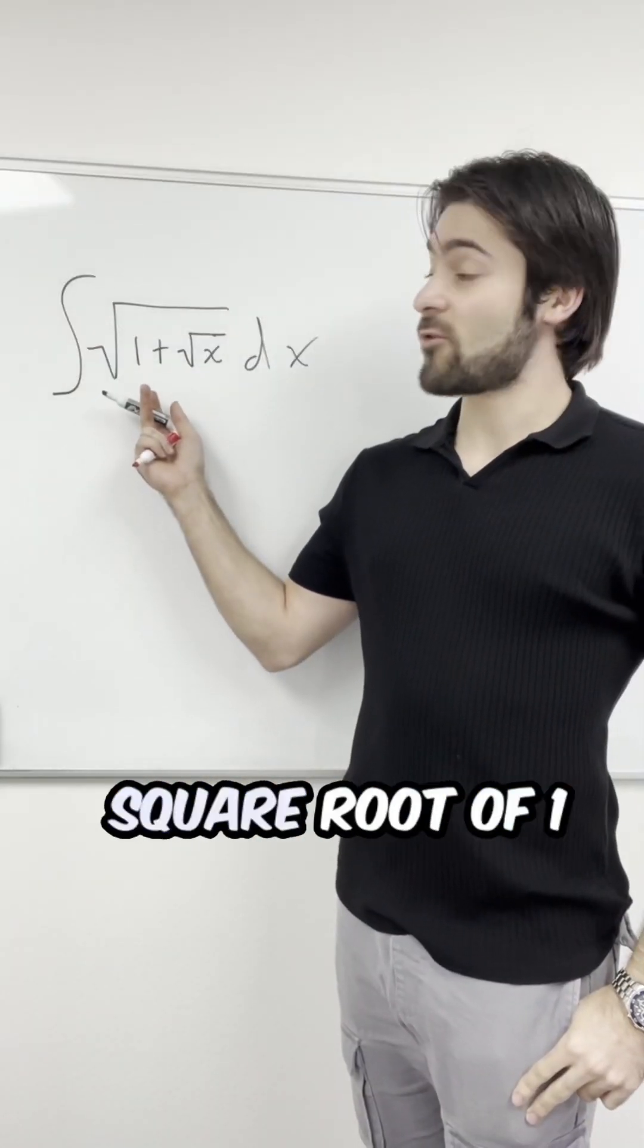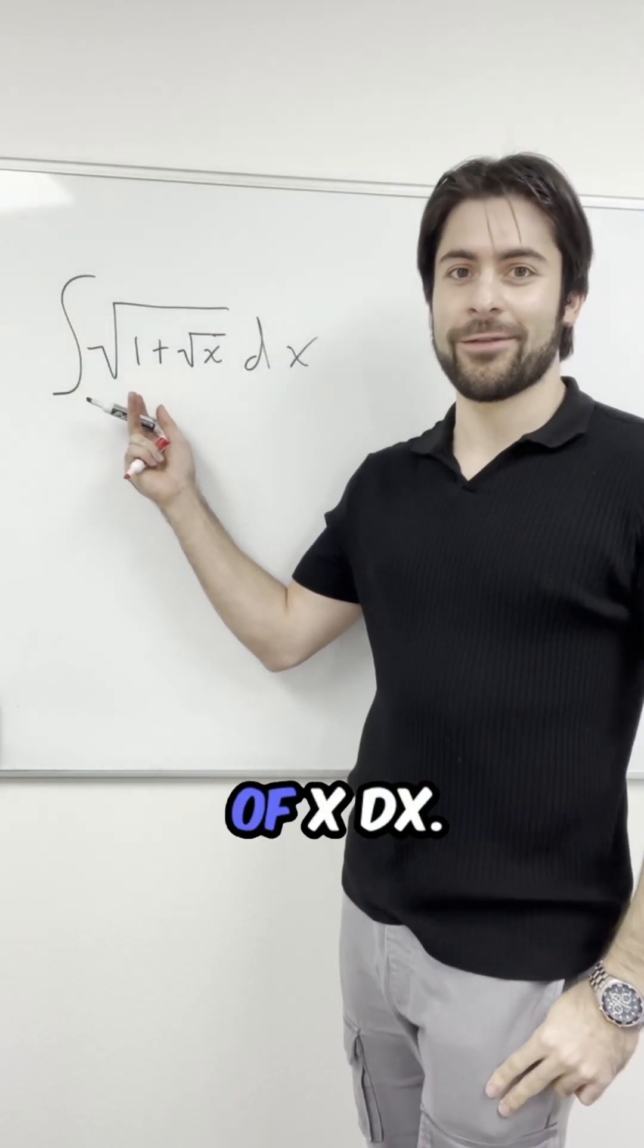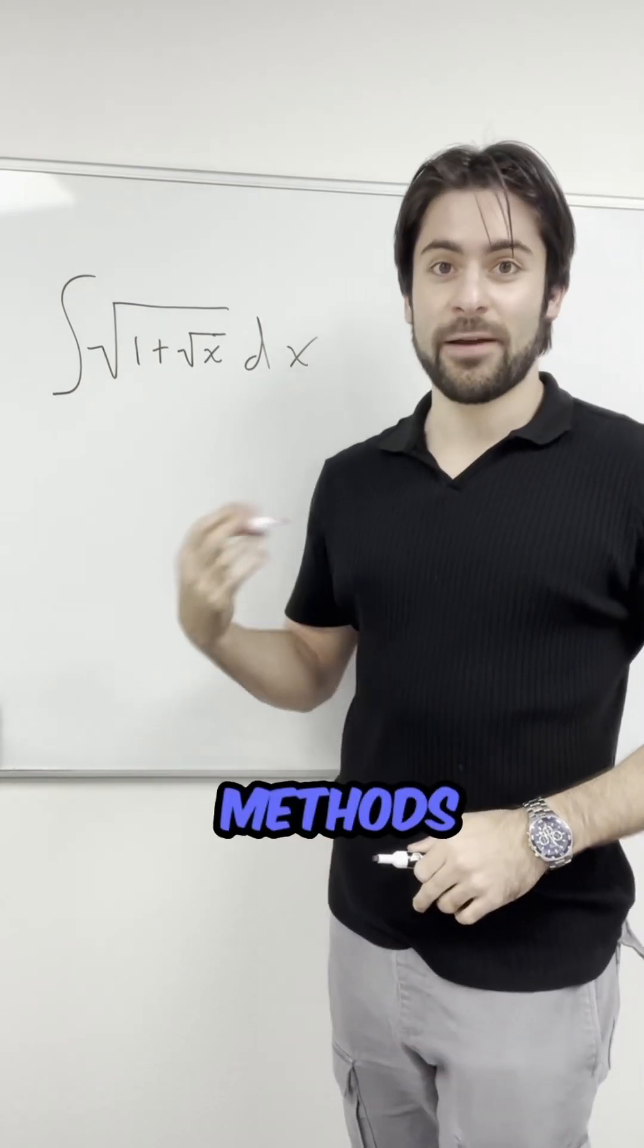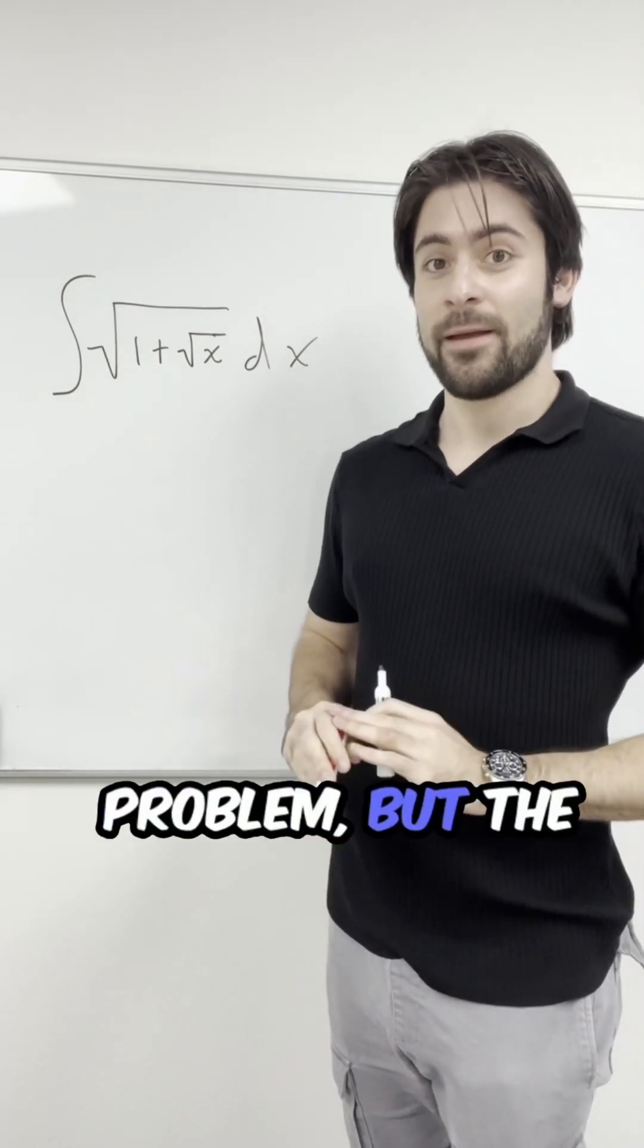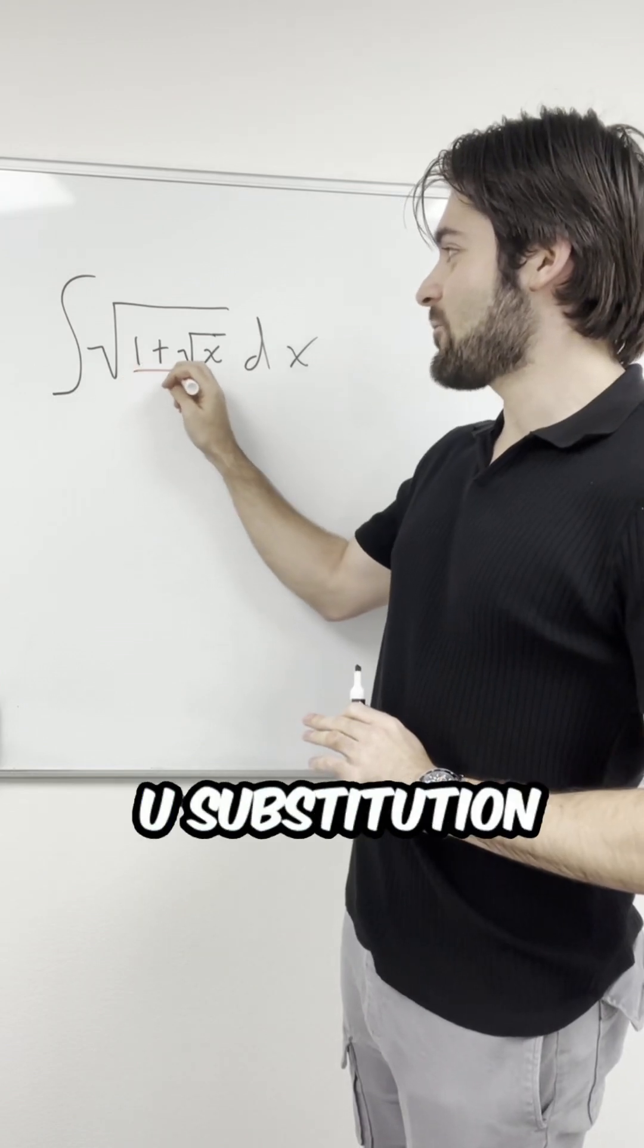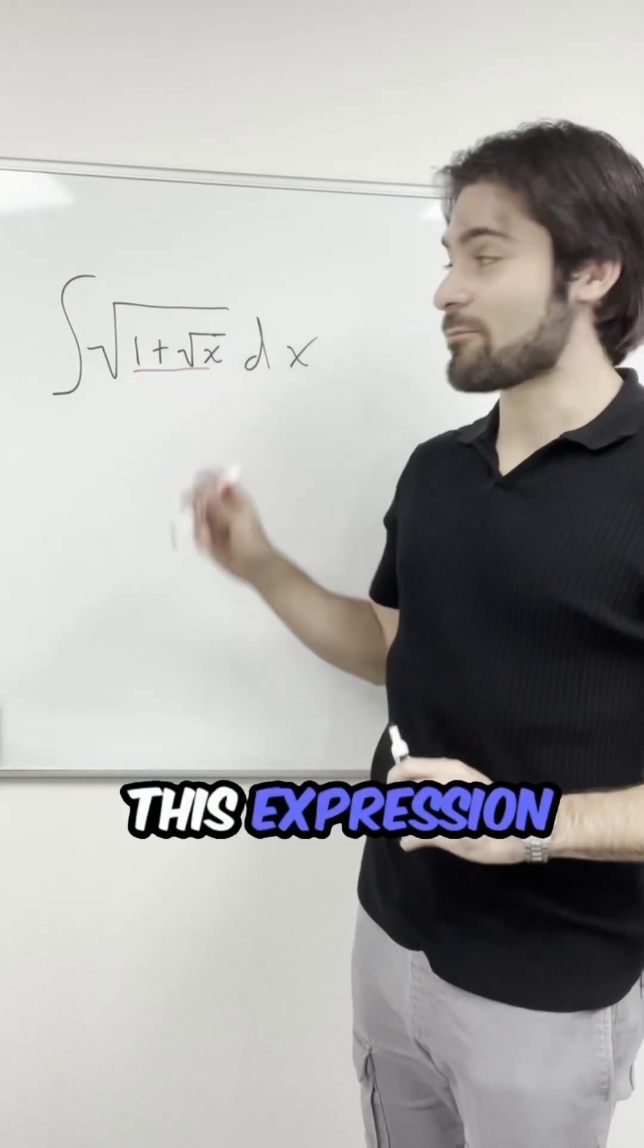So for this problem, we have an integral of square root of 1 plus square root of x dx. Now there's a handful of methods you could try for this problem, but the recommended approach would be to make a u substitution for this expression here.